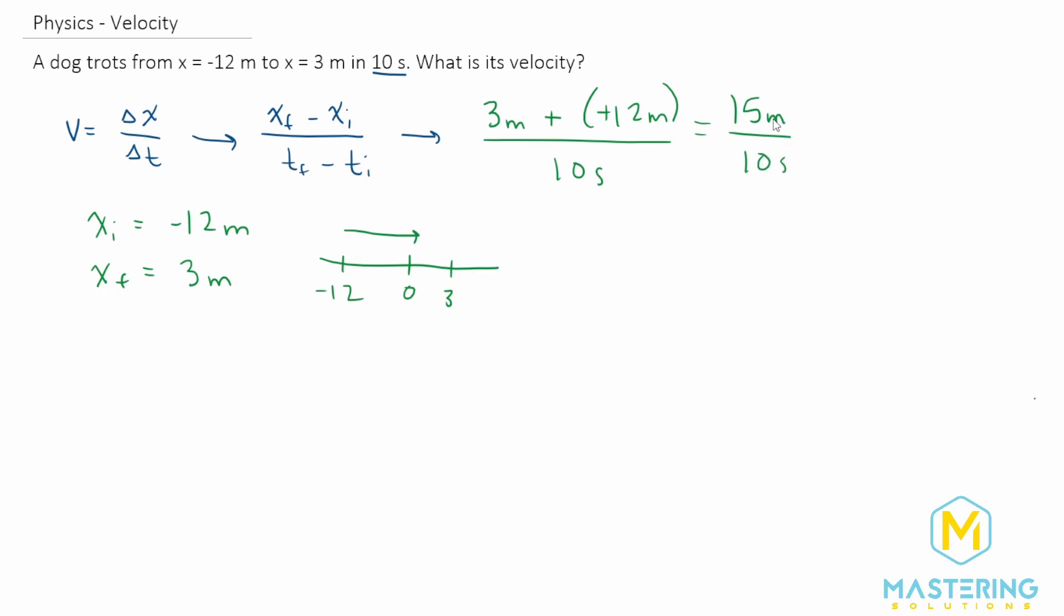All we have to do here is just move the decimal place over 1, and the final answer of the velocity of the dog is 1.5 meters per second.